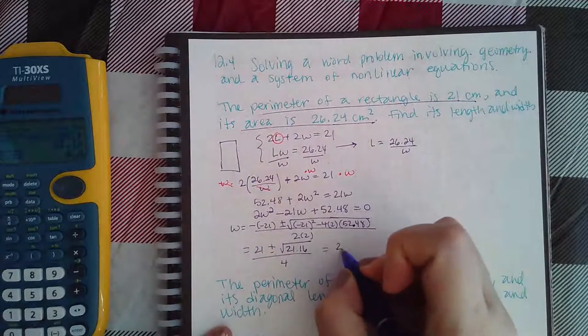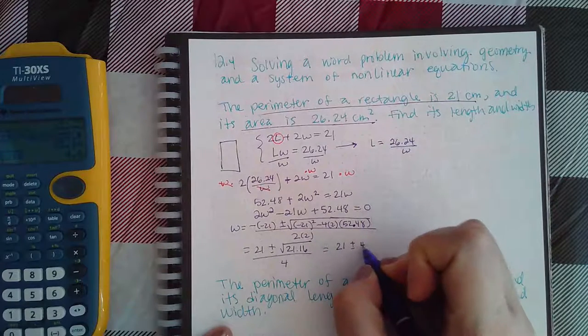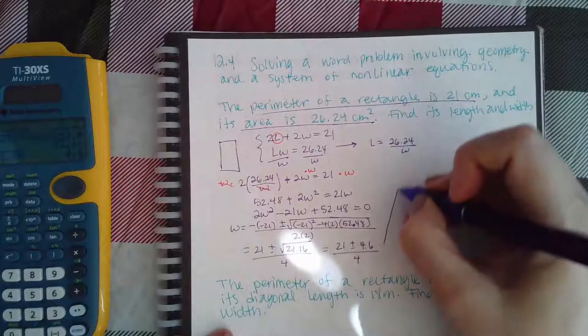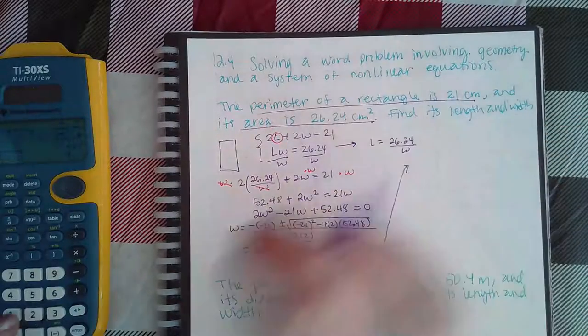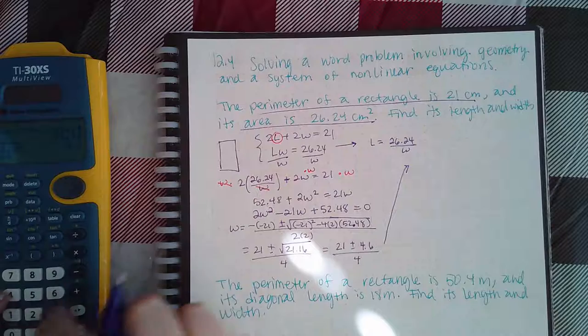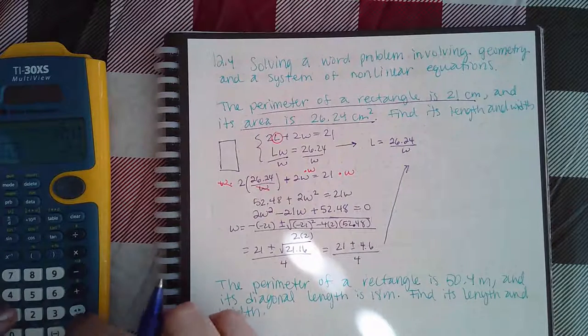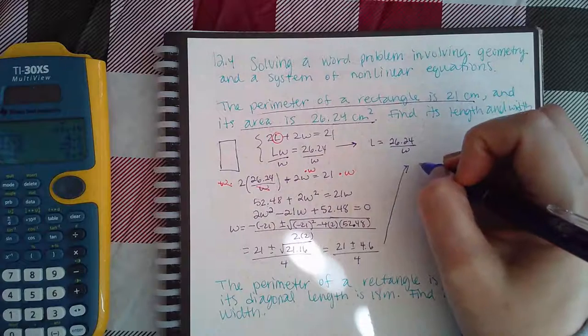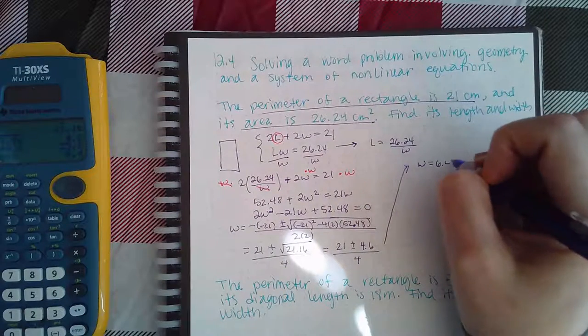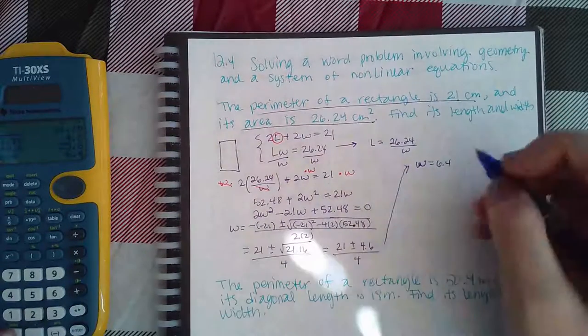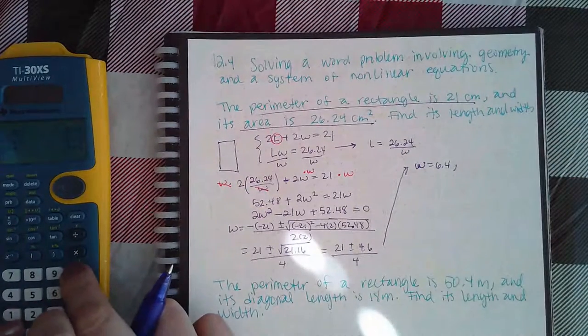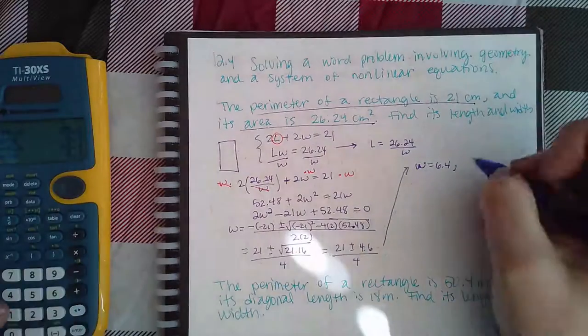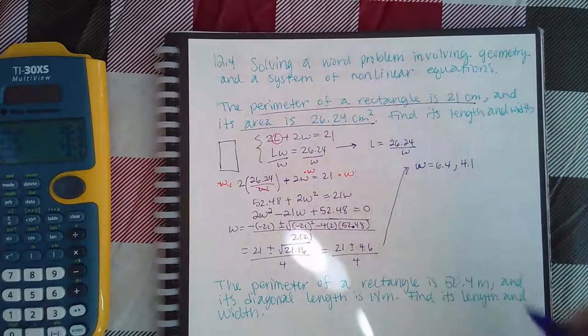Let's see, we get 21 plus or minus the square root of 21.16 over 4, which gives me 21 plus or minus 4.6 over 4. So I have two answers here: I have 21 plus 4.6 divided by 4, which gives me 6.4.